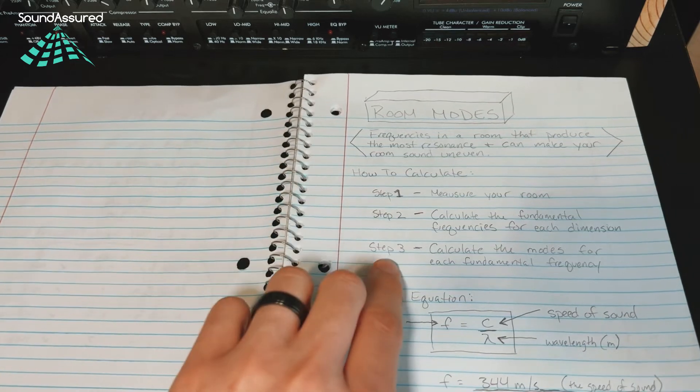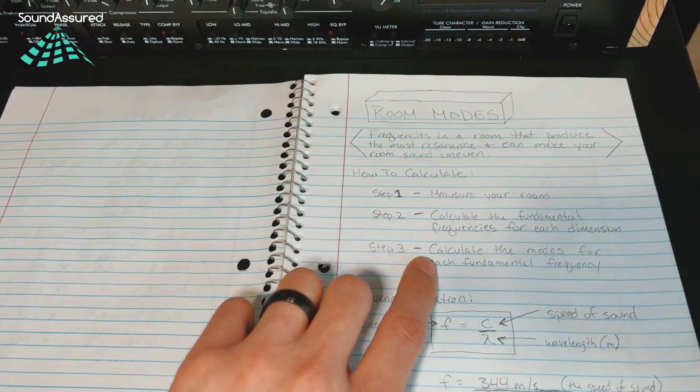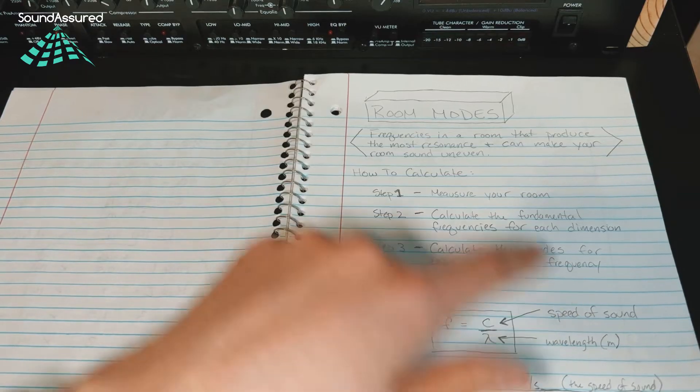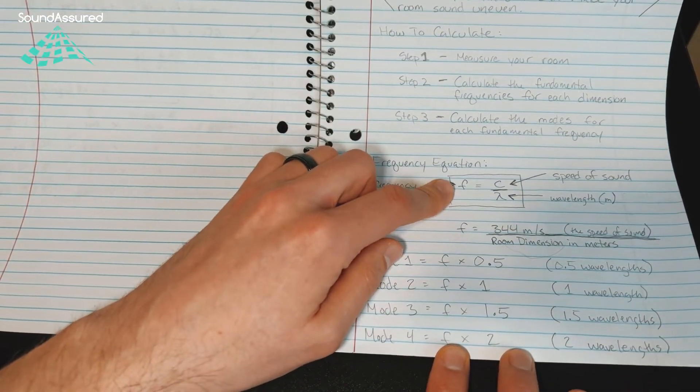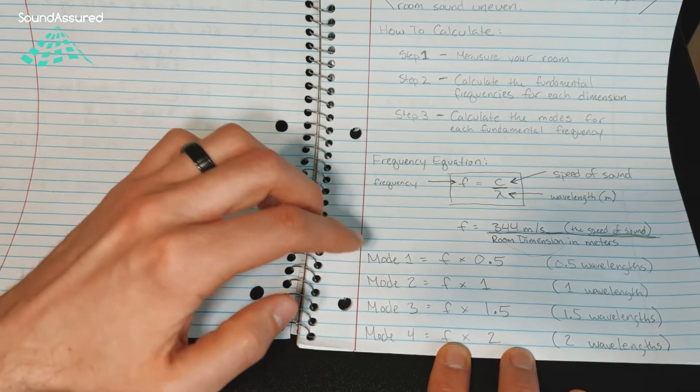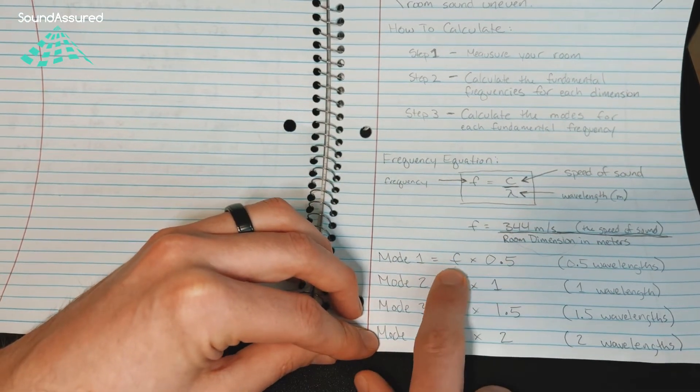So the third step is to calculate the modes for each fundamental frequency. You'll have three fundamental frequencies, and then for each frequency you'll be able to calculate the modes.